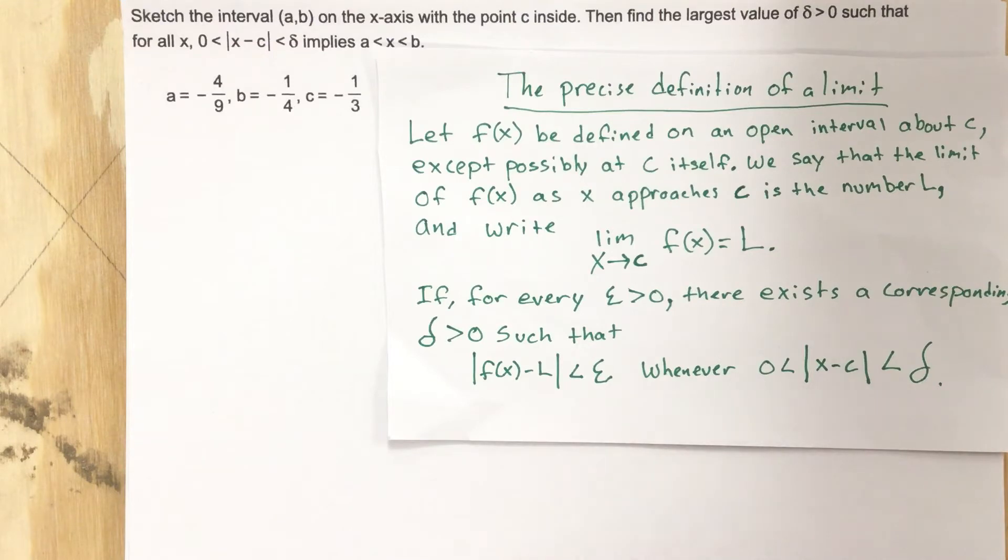They're how precise we are with finding our limit. That's why it says the precise definition of limit, because we're always trying to get closer and closer to this point c itself. And because we can technically never reach that point c, we're going to set up tolerances to get us as close as possible as we can or to whatever we decide is the tolerance.